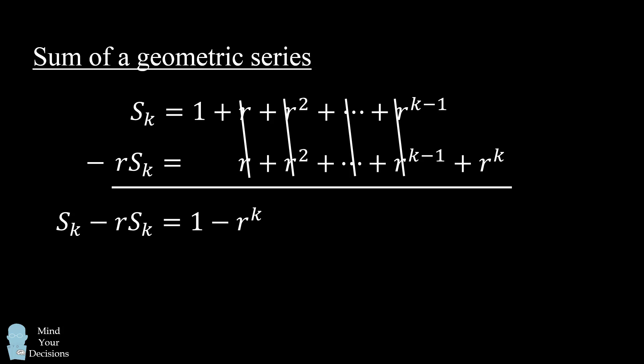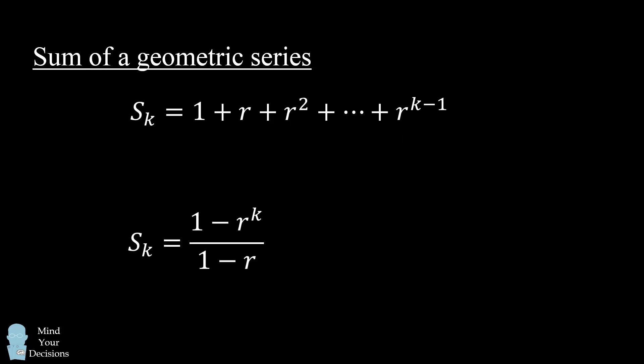We now factor s sub k on the left-hand side, and then we divide both sides by 1 minus r. And that's the formula that we want. The sum of a geometric series will be equal to a fraction where the numerator is 1 minus r to the power of k and the denominator is 1 minus r.